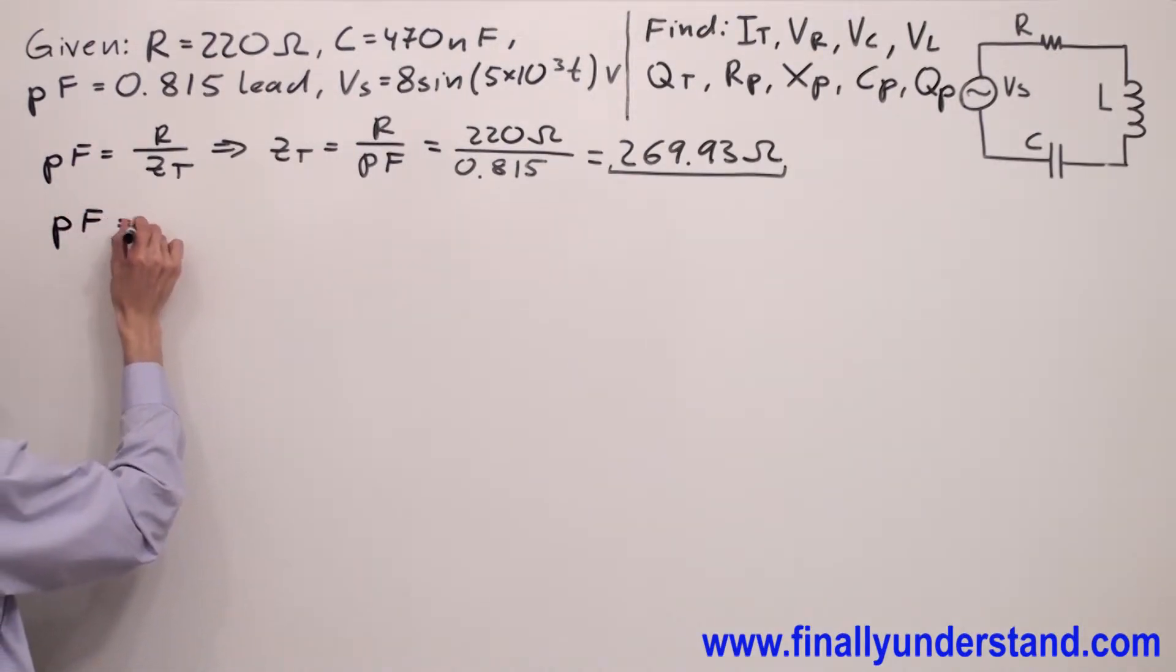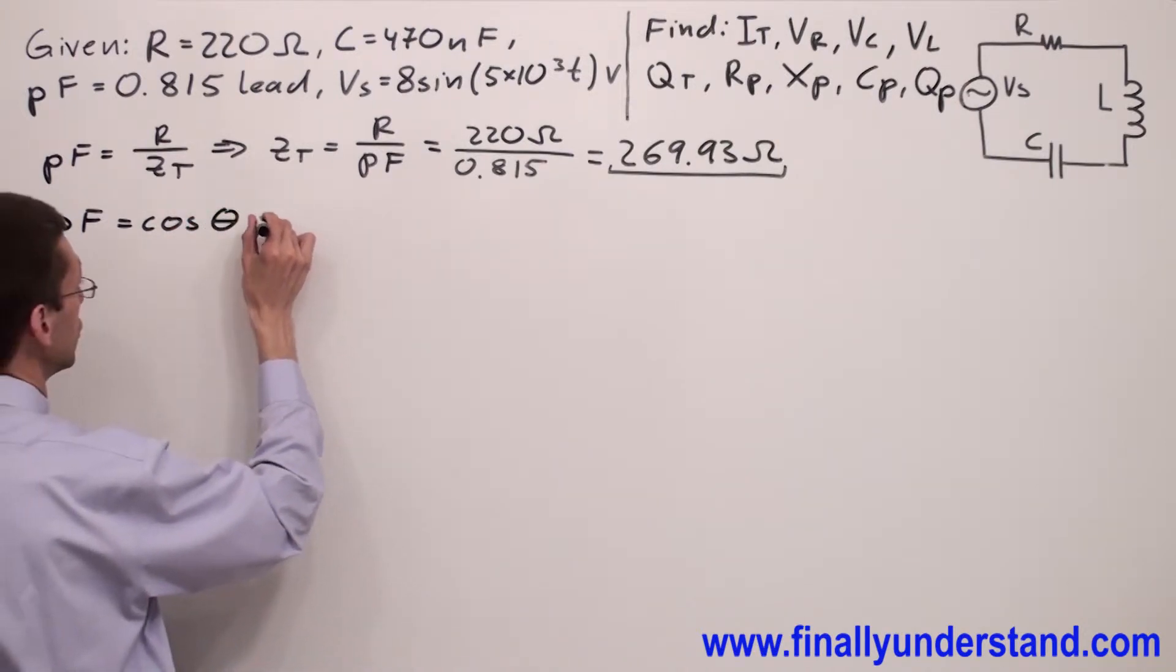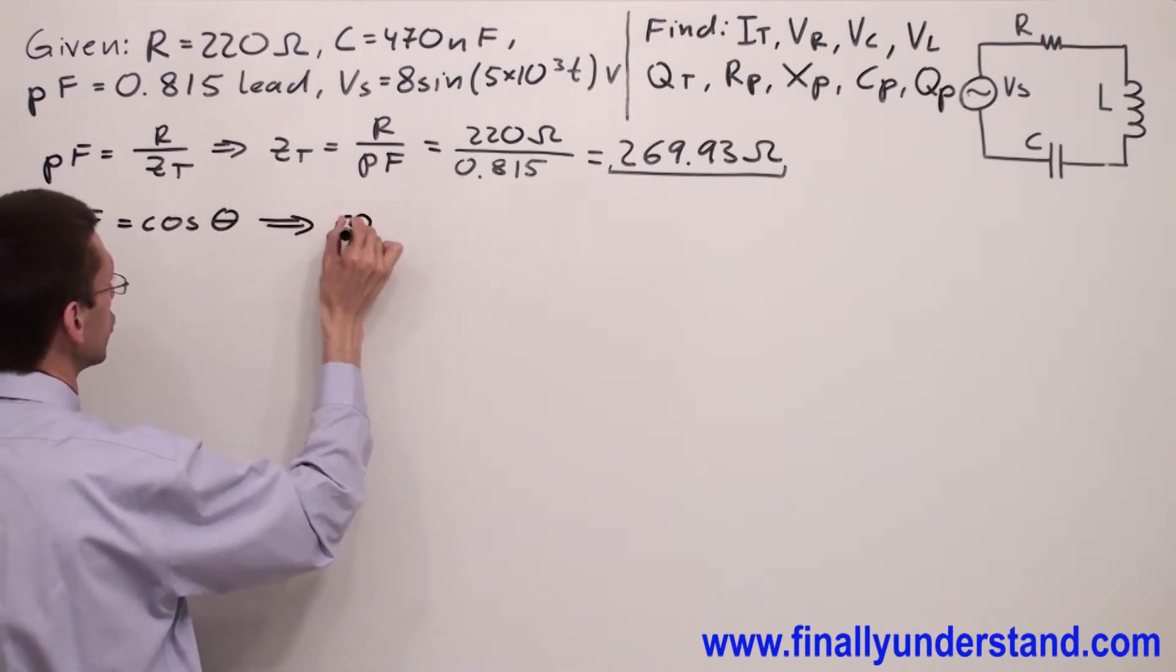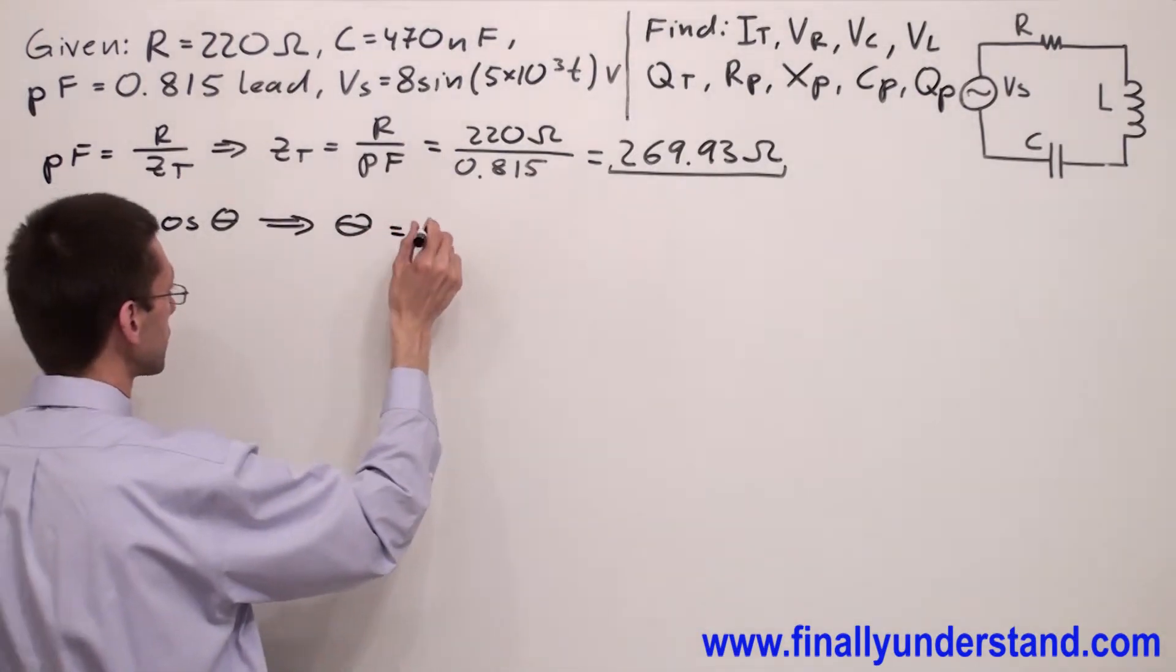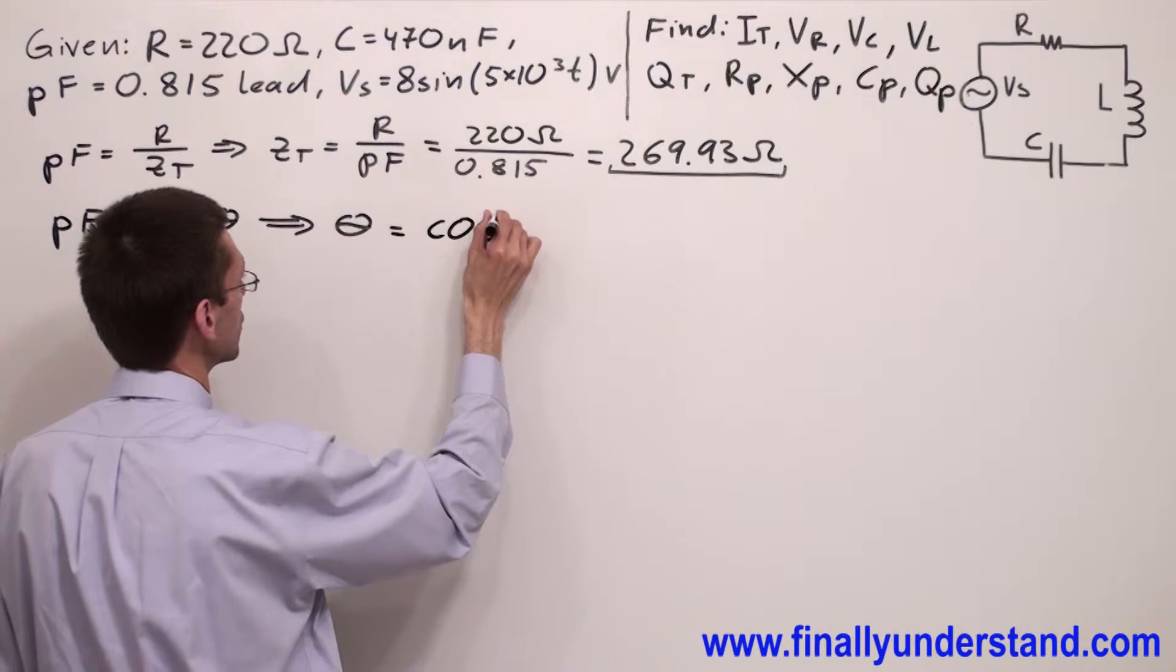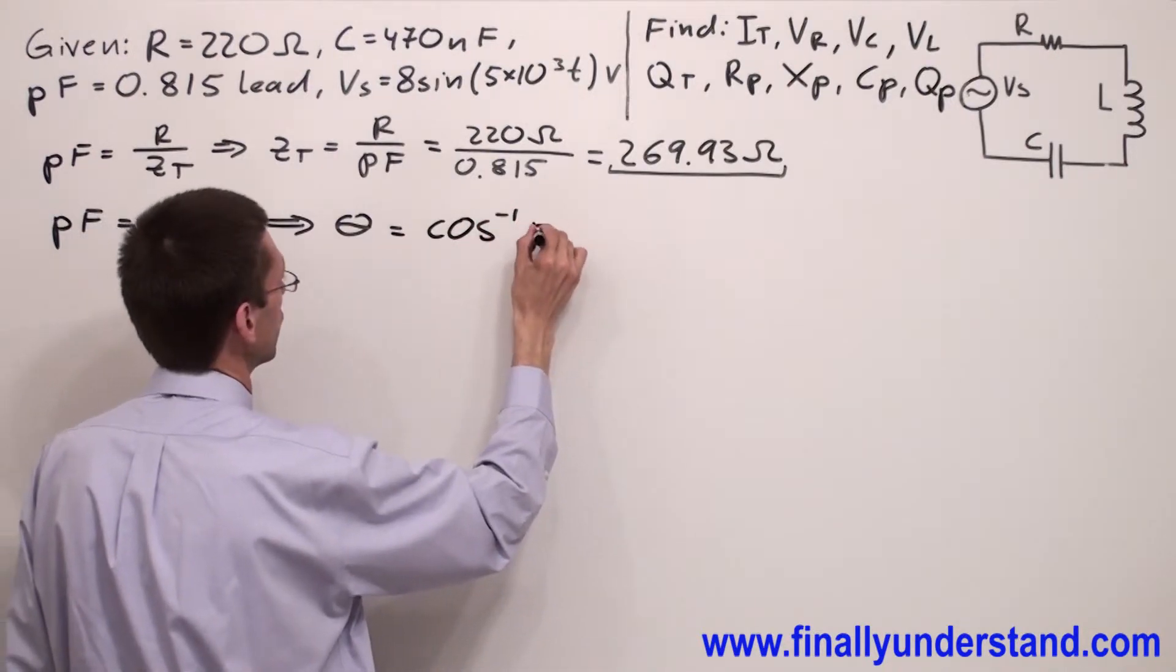Power factor is equal to cosine of angle theta. In order to find angle theta, you're supposed to solve this formula for theta. This is equal to inverse cosine of power factor.